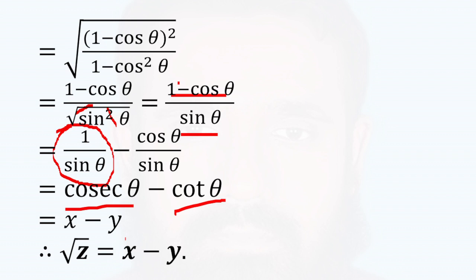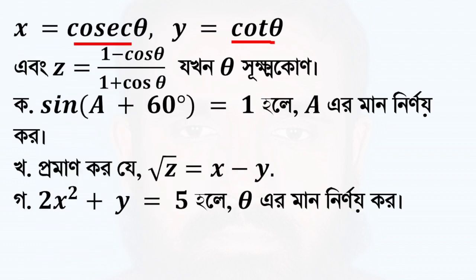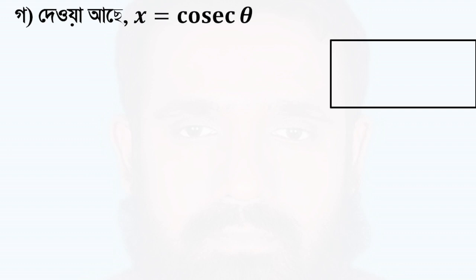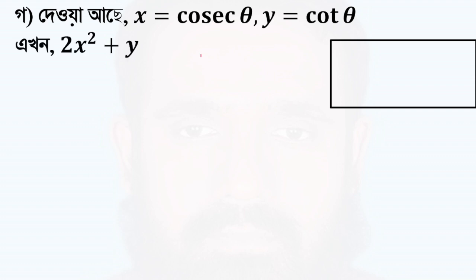So the next question is: 2x squared plus y equal to 5. What do we need to do? We need to find the value. Given x equal to cos theta and y equal to cos theta, then 2x squared plus y equal to 5.